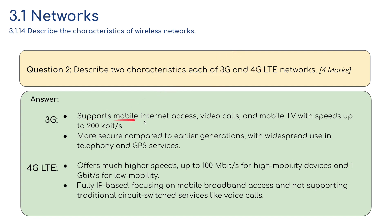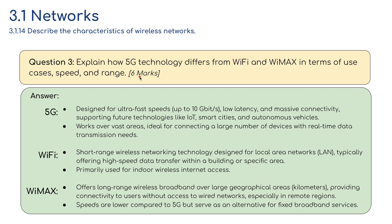Answer to question two: 3G supports mobile internet access, video calls, and mobile TV with speeds up to 200 kilobits per second, and is more secure compared to earlier generations with widespread use in telephony and GPS services. However, 3G is now considered obsolete in most developed areas. 4G LTE offers much higher speeds — up to 100 megabits per second for high-mobility devices and 1 gigabit per second for low-mobility devices — and is fully IP-based, focused on mobile broadband rather than traditional circuit-switched voice calls.